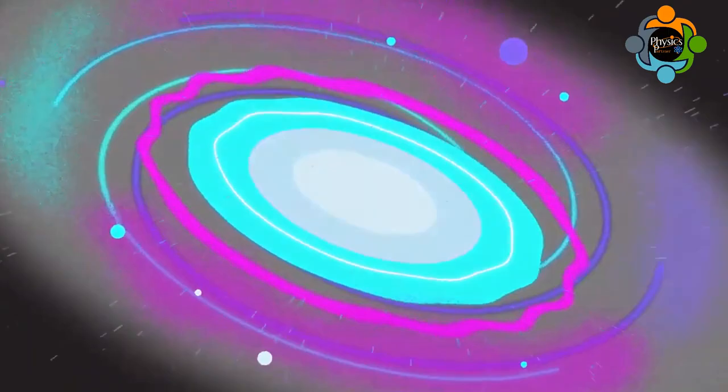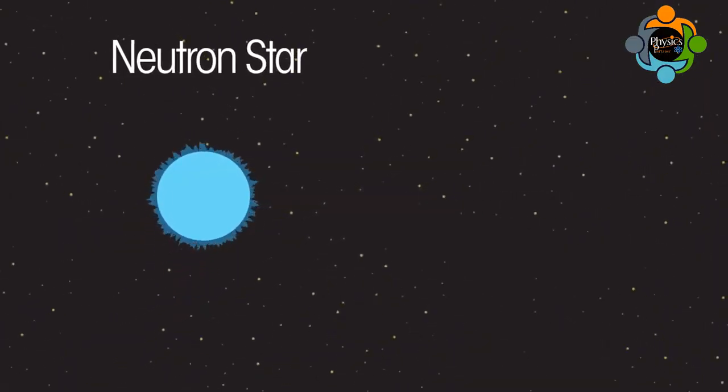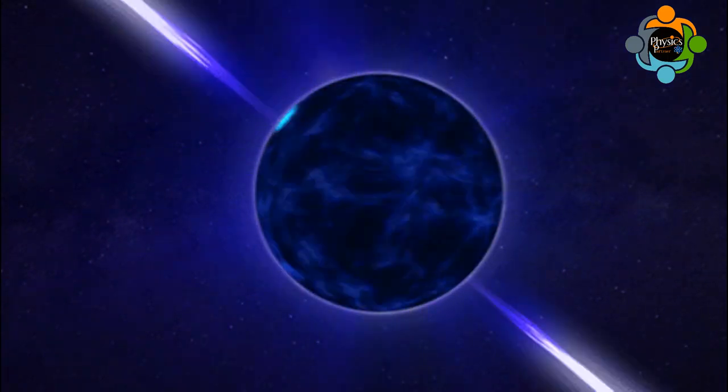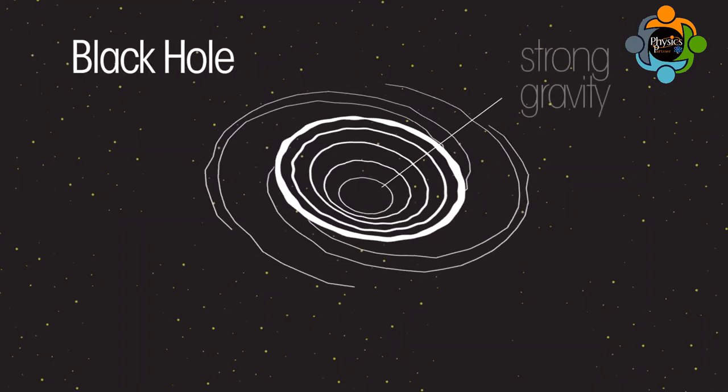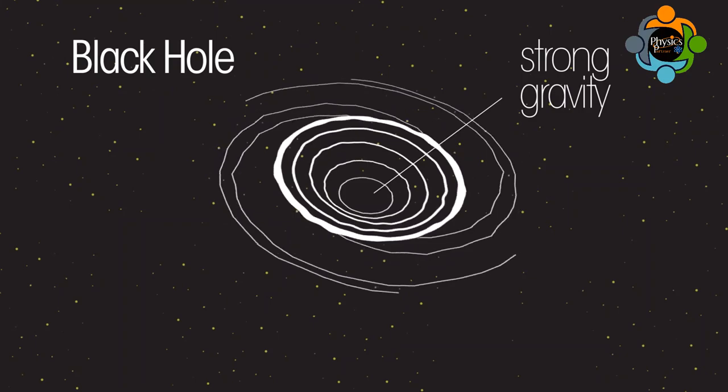After the dust clears, a very dense neutron star is left behind. If the star is especially massive when it explodes, it forms a black hole. This is how we can describe the life cycle of the star.